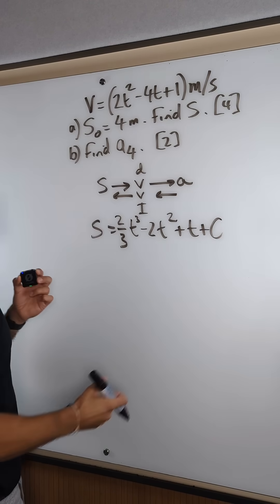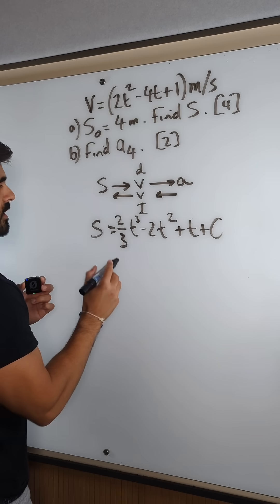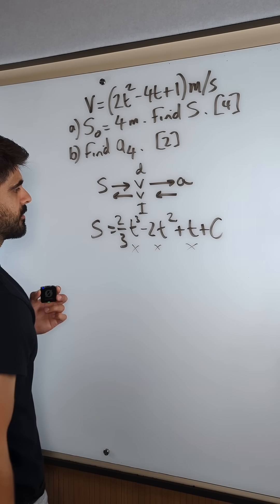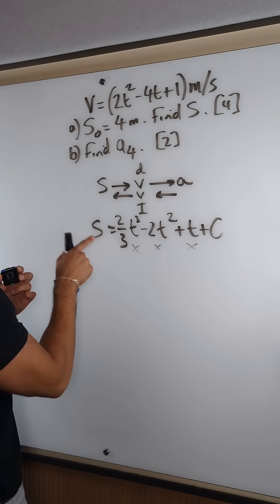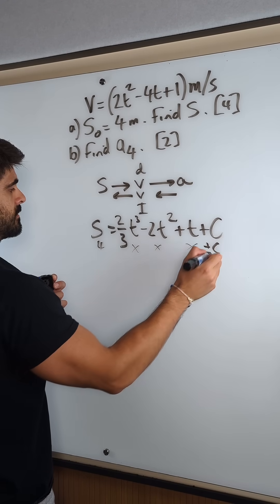Now in the question they said s0 is 4. That's just the way I like to write things. That's just saying the initial displacement when t is 0. Now when t is 0 all of these terms will just end up disappearing. So you're left with s being 4 and that's your c. Yeah c is 4.